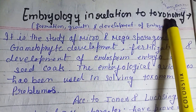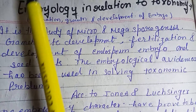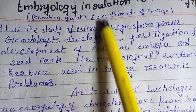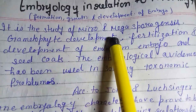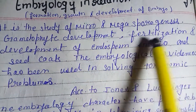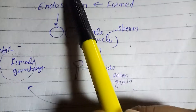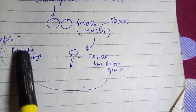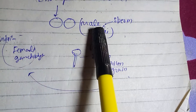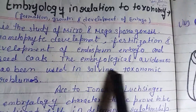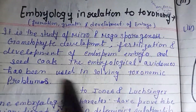Embryology in relation to taxonomy: embryology is the study of formation, growth, and development of the embryo, including micro and megasporogenesis, male and female gametophyte development, fertilization, and development of endosperm. The embryo and endosperm are formed when two sperm nuclei inside the pollen grain reach the interior of the female gametophyte. Embryology evidence has been useful in solving taxonomy problems.